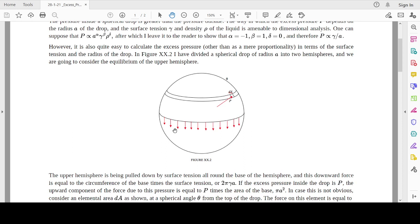Circumference is 2πa, so 2πa times gamma, that is the force due to surface tension. If the excess pressure inside the drop is P, the upward component of the force due to this pressure is equal to P times area of base. Excess pressure P on the area πa² gives the upward force. This force equals the surface tension force.